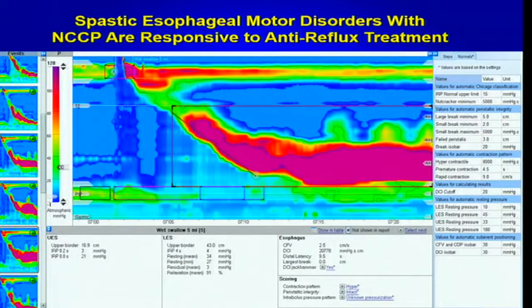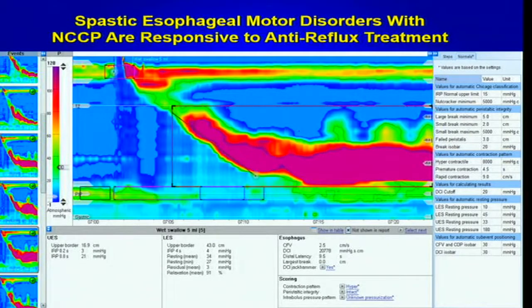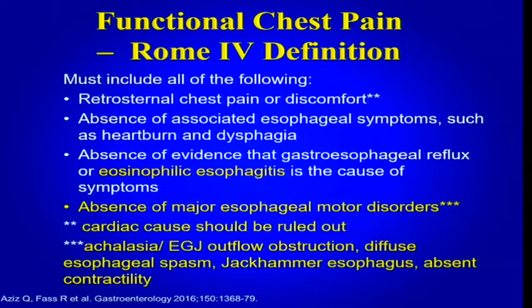A patient with jackhammer esophagus is a relevant example here. Some studies — many of which were done in patients with nutcracker esophagus, now debunked by the Chicago Classification — suggested that reflux may lead to a hypercontractile response, either in the form of nutcracker esophagus or jackhammer esophagus, and that can lead to chest pain. However, when you look at the prevalence of these abnormalities among NCCP patients, it really is the minority, which brings us to functional chest pain.